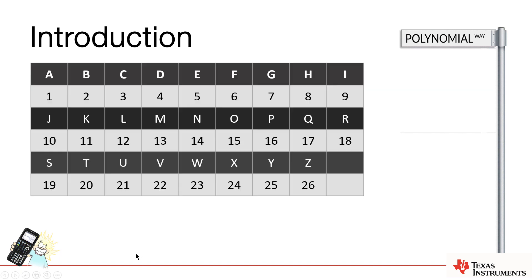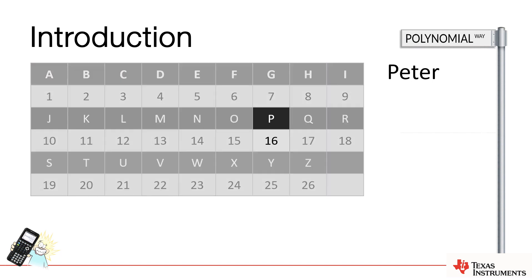So let's do an example. My name's Peter. My first point aligns to the sixteenth letter of the alphabet, being P. So my first point is 1 comma 16 — 1 because P is the first letter of my name, and 16 because P is the sixteenth letter of the alphabet.